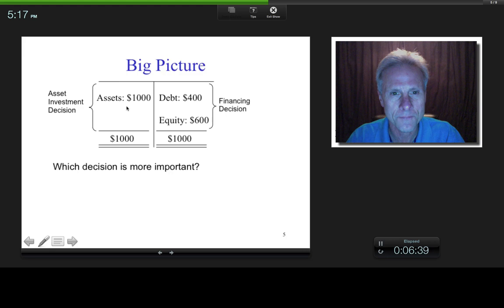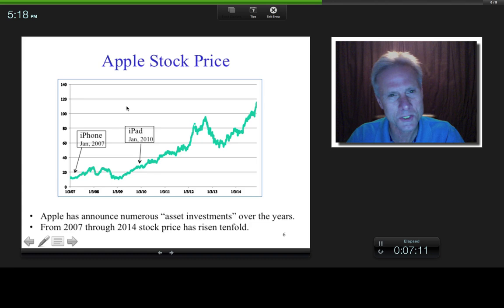Just to give you a quick example. Suppose Apple announced, you know what? We're going to get into the fish farming business. Now, if they did that, would that be an asset investment decision? It would, right? And what do you think would happen to their stock price when they announced it? Well, presumably, it'd plummet, right? Because Apple doesn't have expertise in fish farming. So, the asset investment decision is presumably the most important decision a company makes.